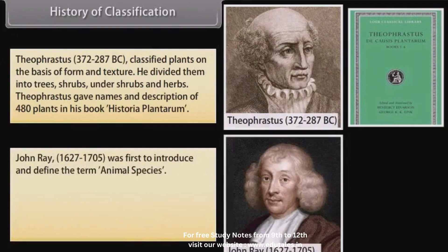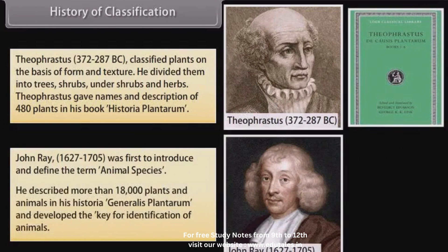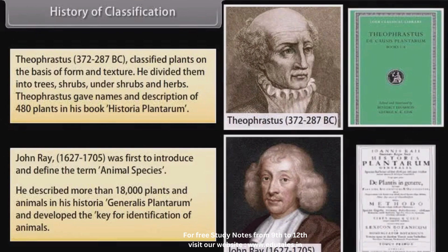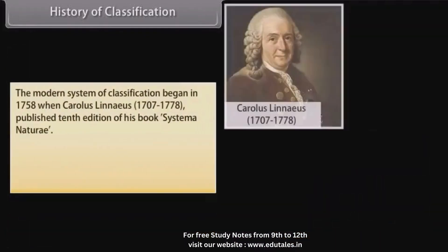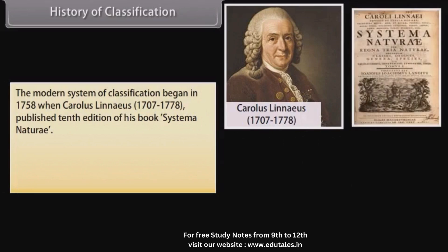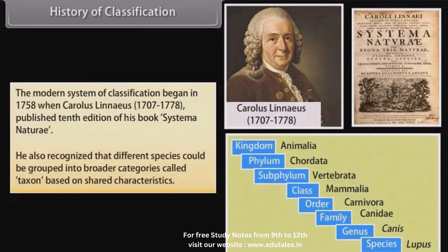John Ray (1627–1705) was first to introduce and define the term animal species. He described more than 18,000 plants and animals in his Historia Generalis Plantarum and developed the key for identification of animals. The modern system of classification began in 1758 when Carolus Linnaeus (1707–1778) published the 10th edition of his book Systema Naturae. He also recognized that different species could be grouped into broader categories called taxon, based on shared characteristics.